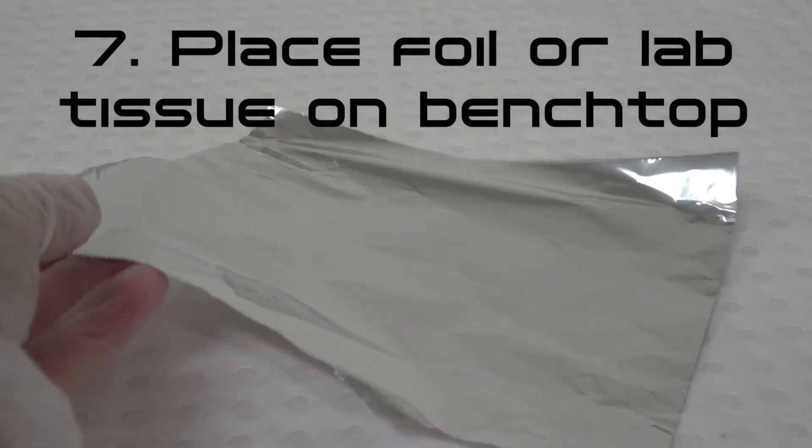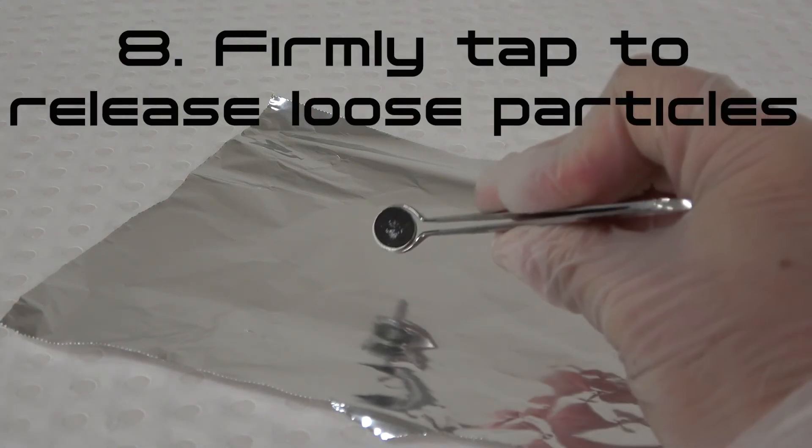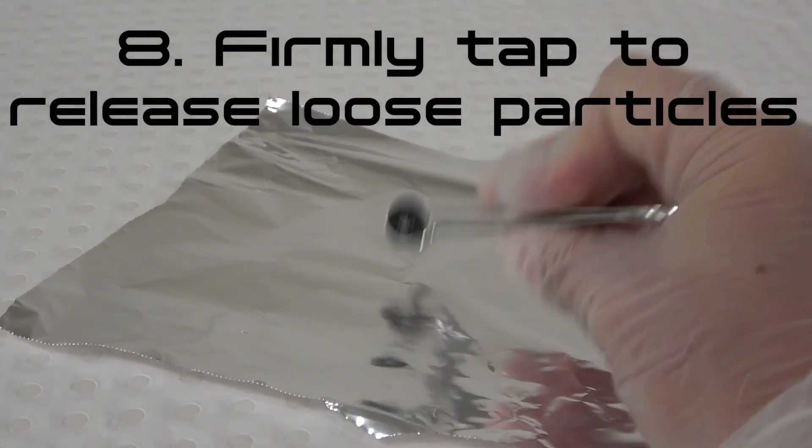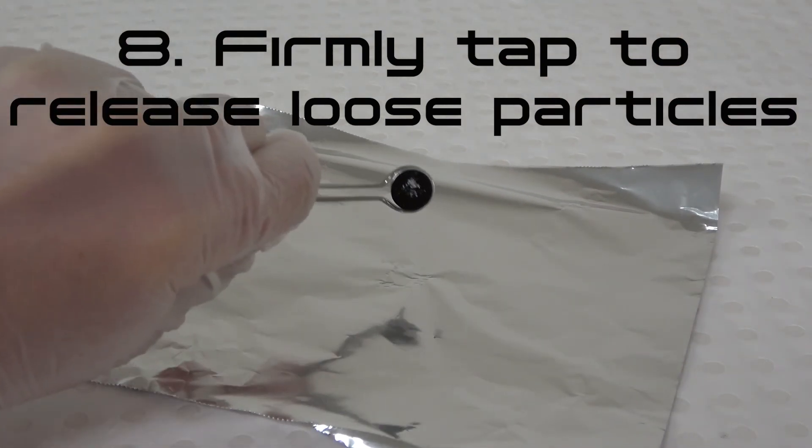Step 7. Spread a clean piece of foil or low lint lab tissue on the bench top. Step 8. Firmly tap the side of the SEM stub onto the foil so that any loose particles fall off the stub.